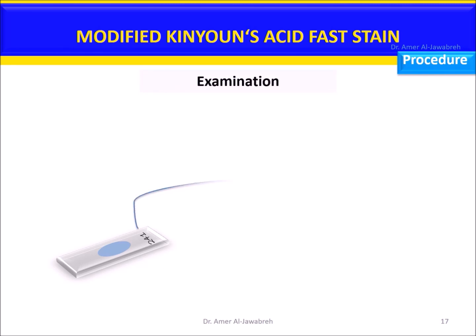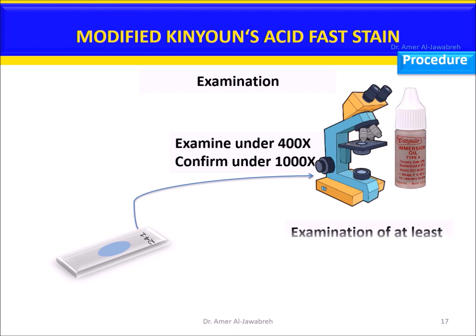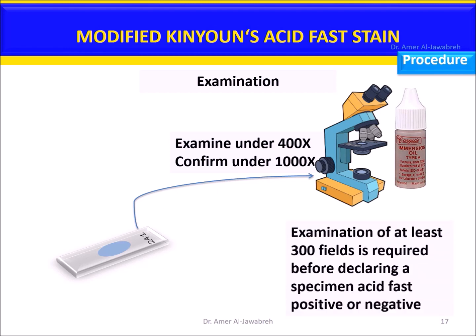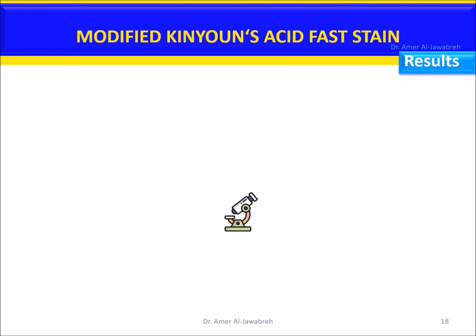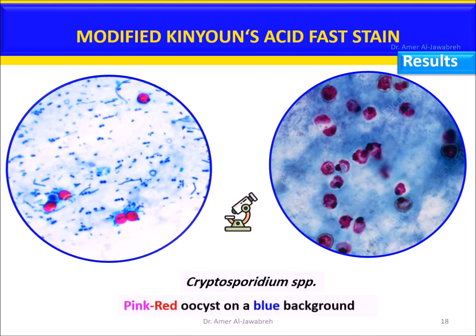Examination: examine under 400× and confirm under 1000×. Examination of at least 300 fields is required before declaring a specimen acid-fast positive or negative. Results: Cryptosporidium species — pink-red oocyst on a blue background, 4–6 micrometers. Sporozoites inside the oocyst may be seen.